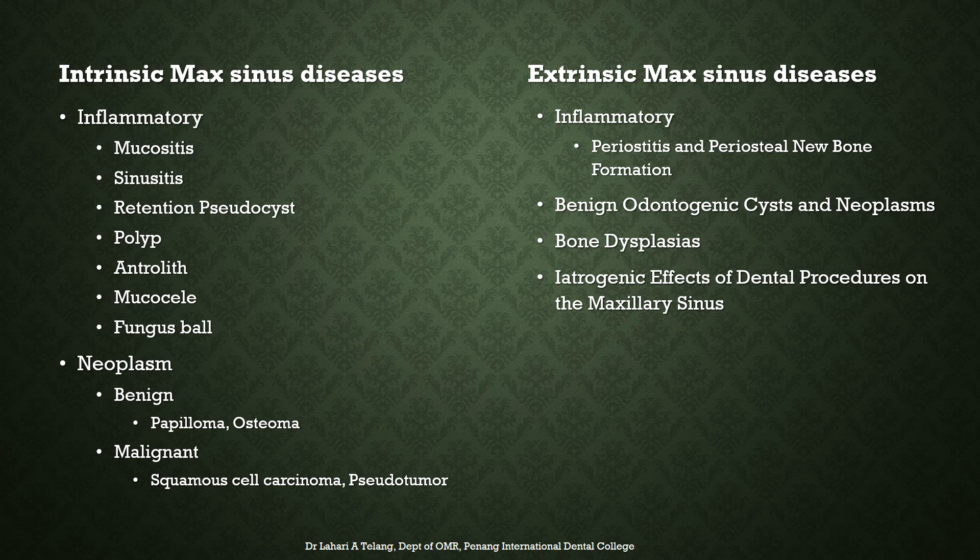Under extrinsic maxillary diseases, we have the inflammatory category with periostitis and periosteal new bone formation, primarily due to periapical inflammation from infected maxillary teeth. Also benign odontogenic cysts and neoplasms which grow into the maxillary sinus, bone dysplasias such as fibrous dysplasia, or iatrogenic effects of dental procedures on the maxillary sinus.